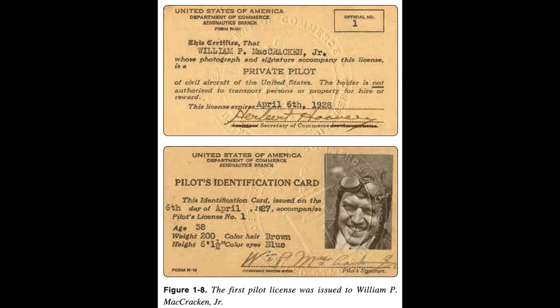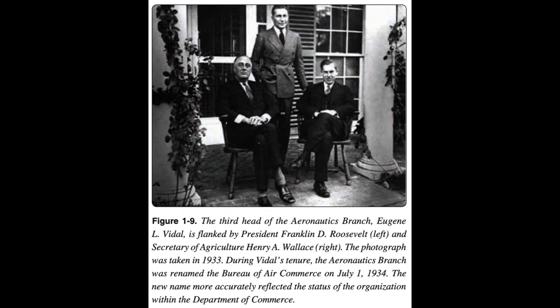Equally important for safety was the establishment of a system of certification for aircraft. On March 29, 1927, the Aeronautics branch issued the first airworthiness type certificate to the Buell Airster CA-3, a three-place open biplane. In 1934, to recognize the tremendous strides made in aviation and to display the enhanced status within the department, the Aeronautics branch was renamed the Bureau of Air Commerce. Within this time frame, the Bureau of Air Commerce brought together a group of airlines and encouraged them to form the first three air traffic control (ATC) facilities along the established air routes.